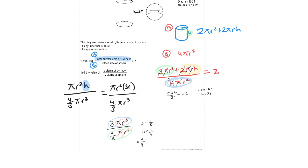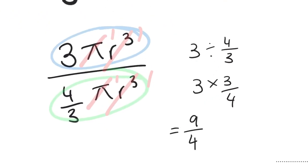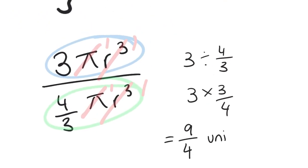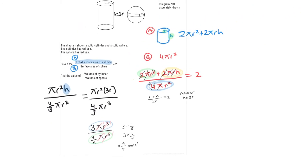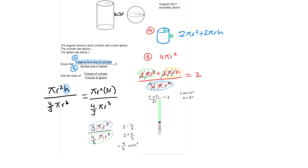The volume of the cylinder divided by the volume of the sphere equals 9/4 (units³). We've used algebra, substitution, and algebraic fraction cancelling throughout. This cancelling method will be covered further next week.